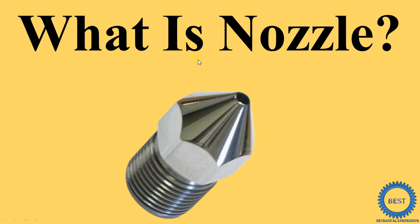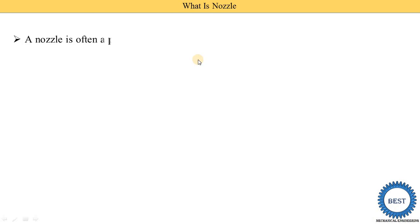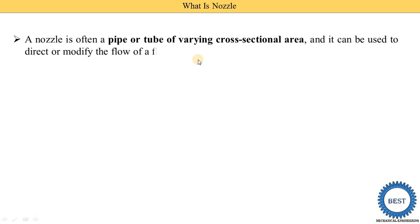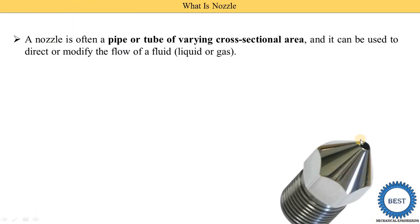In this video I explain what is a nozzle and what are the functions of a nozzle. A nozzle is a pipe or tube with a varying cross-sectional area, and it can be used to direct or modify the flow of fluid. Fluid means liquid or gas. Here you can see the actual image of a nozzle.